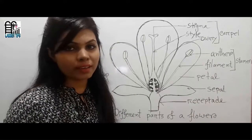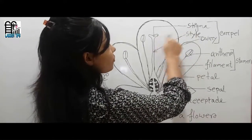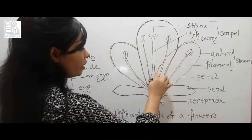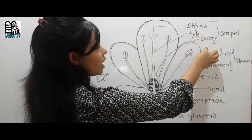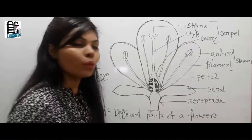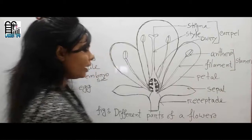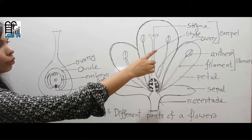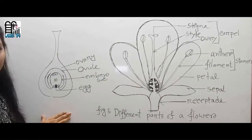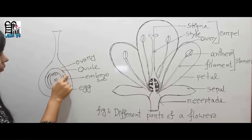and they contain pollen grains. Then stigma, style, and ovary — these three are the female reproductive organs known as the carpel.